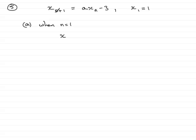Because when n equals 1, we get that x_1 add 1, which is x_2, make sure you have that below the line as a subscript, equals a times x_1, and then minus 3.